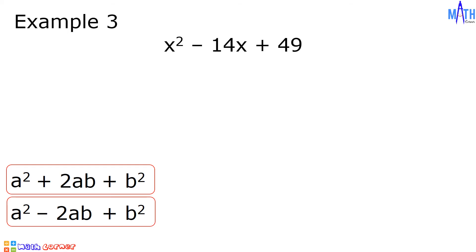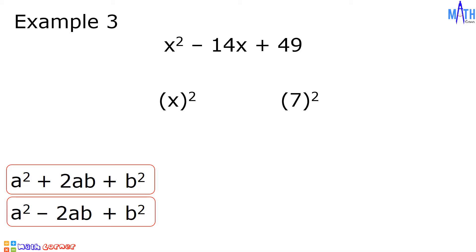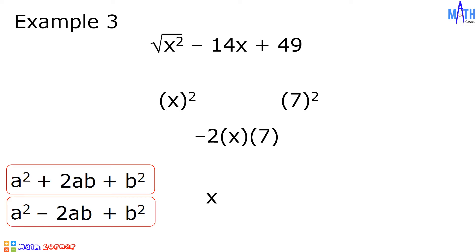Example number 3: let us factor x squared minus 14x plus 49. This must be of the form a squared minus 2ab plus b squared. Since x squared can be written as the square of x, and 49 can be written as the square of 7, then a equals x and b equals 7. Since negative 2ab, or negative 2 times x times 7, is equal to negative 14x, then x squared minus 14x plus 49 is a perfect square trinomial. The square root of x squared is x, the square root of 49 is 7, so we have the square of x minus 7.